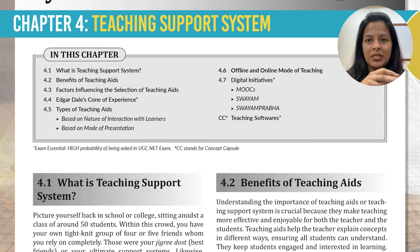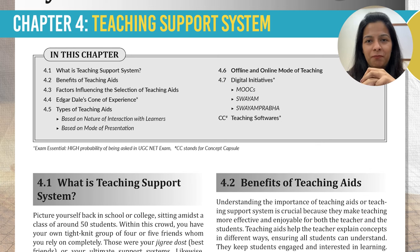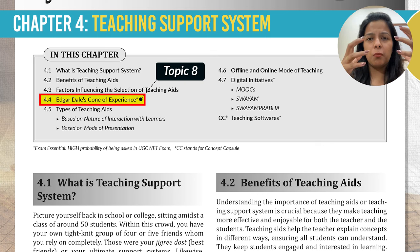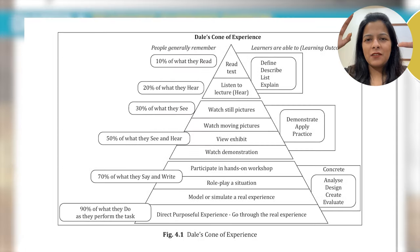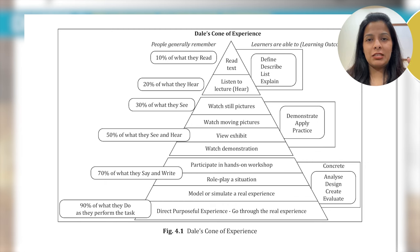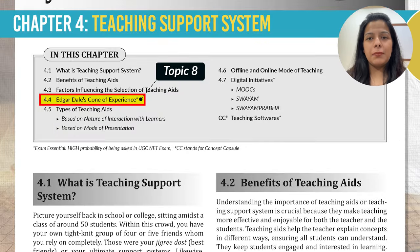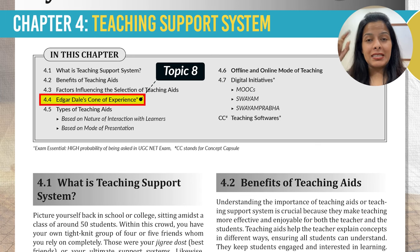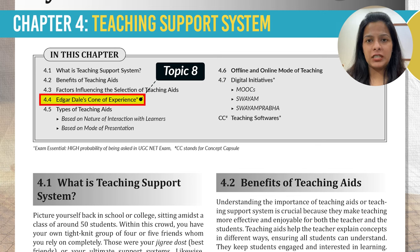The next chapter is teaching support system. This chapter has two of the most essential topics you cannot miss. Number one is Dale's Cone of Experience — a model created by Edgar Dale in 1947 to explain the different ways people learn and retain information. It gives a visual representation of various teaching methods based on the level of engagement they provide. The core idea is that the more actively a learner is involved in the learning process, the better they will understand and retain the material.